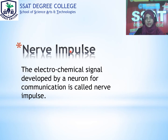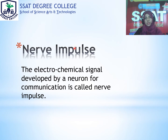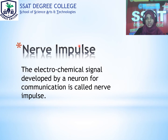Our nervous system is made of two types of tissue. One is neuron and the other one is neuroglia. Neuron creates an electrical chemical message, which we call nerve impulse. And what does neuroglia do? Neuroglia supports the neuron. So nerve impulse is the electrochemical message which is created by our neuron.